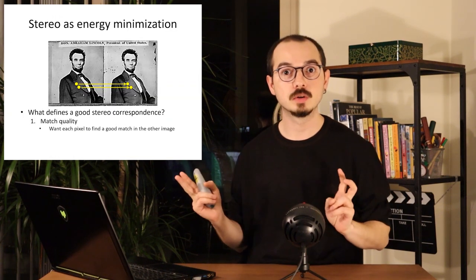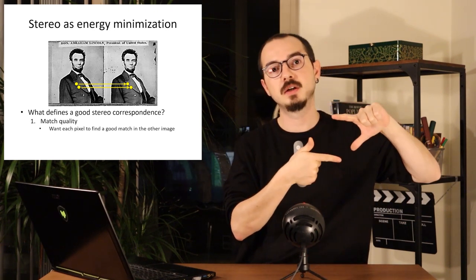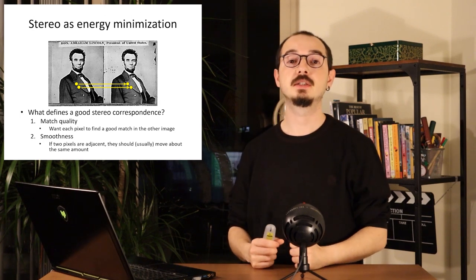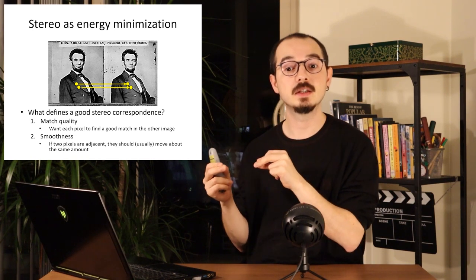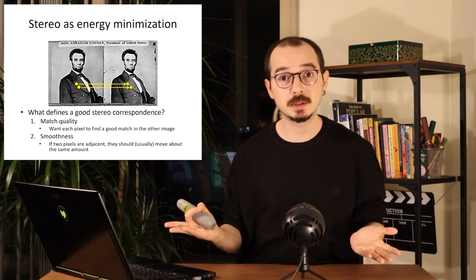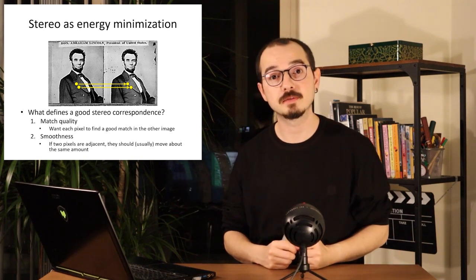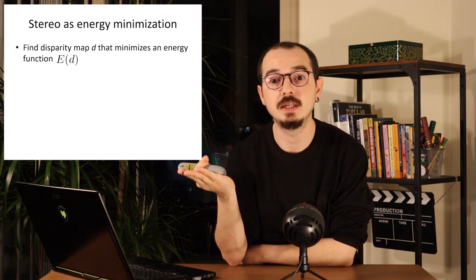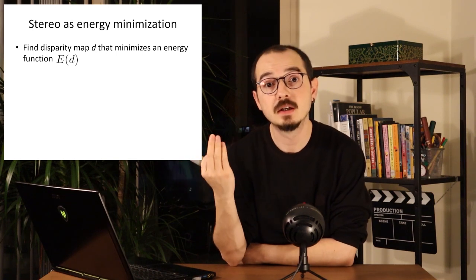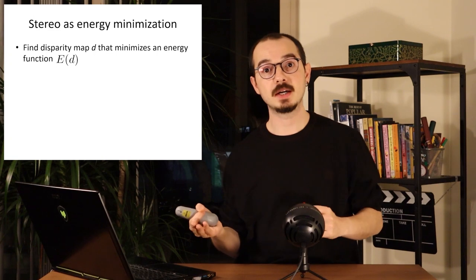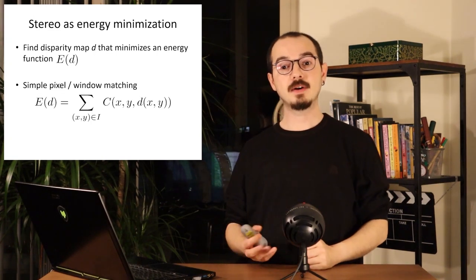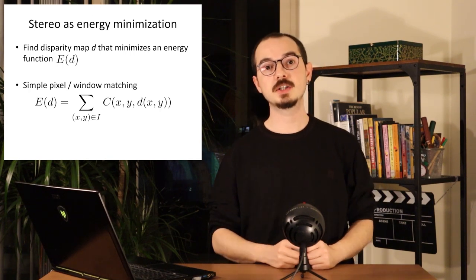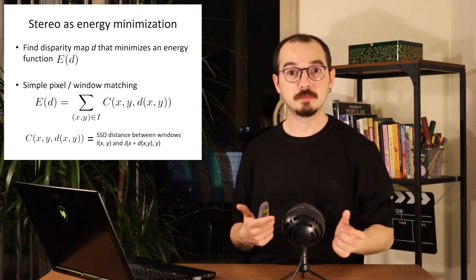We already defined the good-match criterion: the defined windows around our pixel should match very well with the corresponding region in the second image. We will also add a smoothness term — if two pixels are next to each other their depths or disparities should be similar. We define an energy minimization formulation as E(d), which depends on the disparity map d we want to find. The disparity map that minimizes this energy is the solution we are looking for. The C function represents the SSD error, essentially the window matching error.